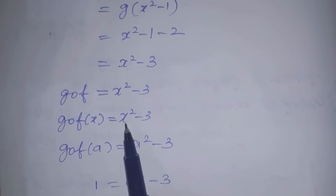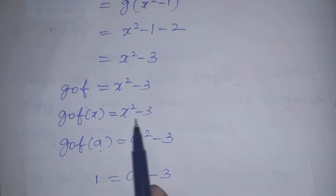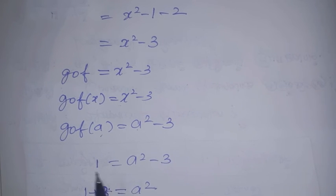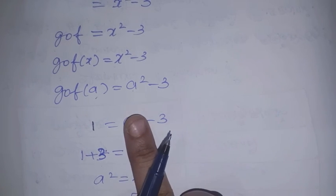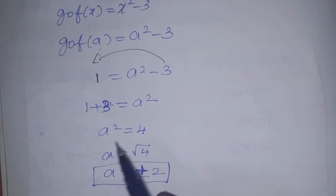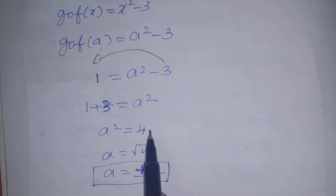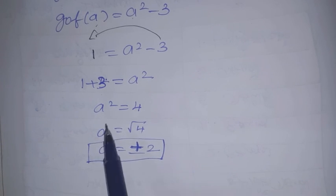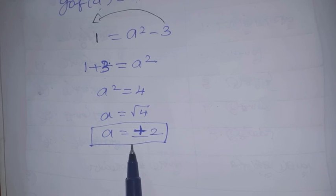Now substituting a: g∘f(a) = a² - 3 = 1. Solving: a² = 1 + 3 = 4. Therefore a = ±2.